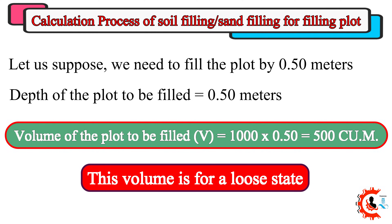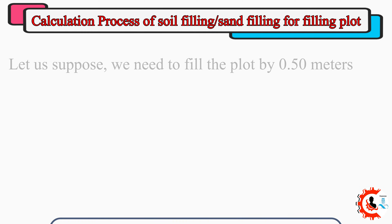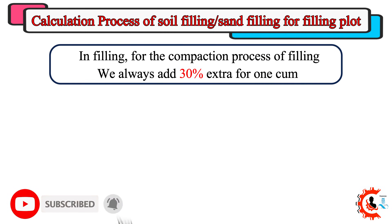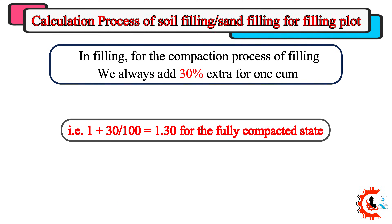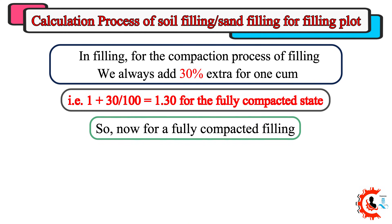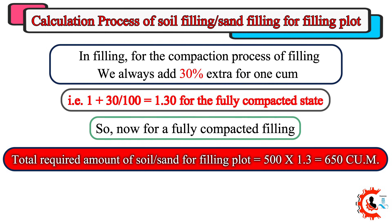This volume is for a loose state. For the compaction process of filling, we always add 30% extra per cubic meter — that is 1 plus 30 divided by 100, equal to 1.30 for the fully compacted state. So for a fully compacted filling, the total required amount of soil or sand equals 500 times 1.3, which is equal to 650 cubic meters.